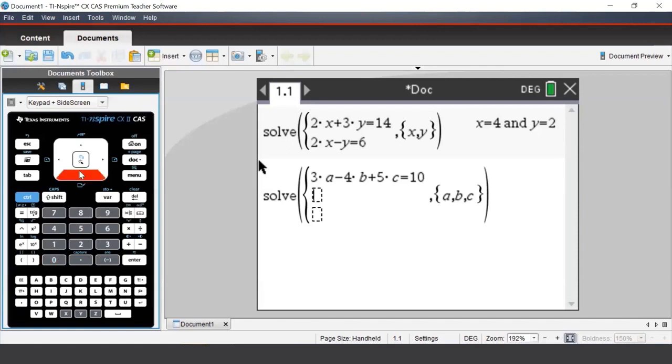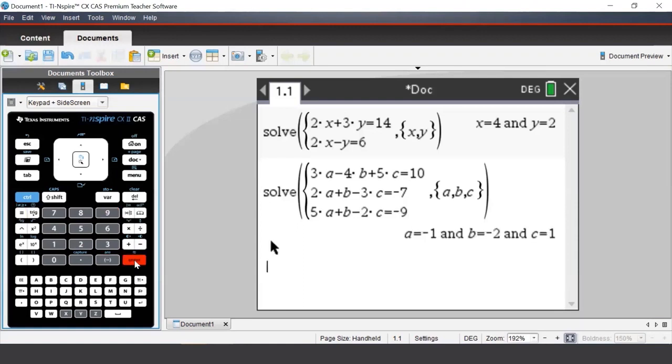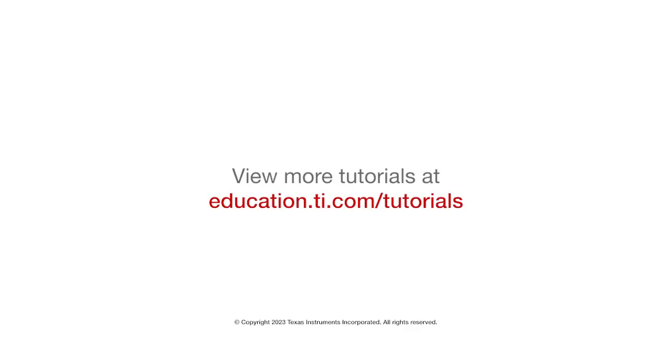We press the down arrow on our handheld to go to the next line and enter in our second equation 2a plus b minus 3c equal to negative 9. And again for our third equation we press down button again and we'll type in 5a plus b minus 2c equal to negative 1.